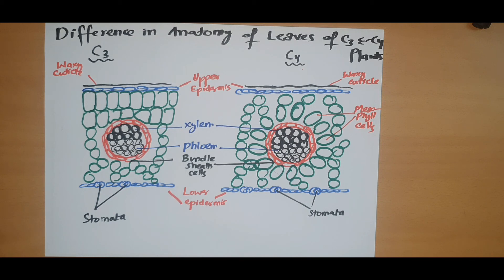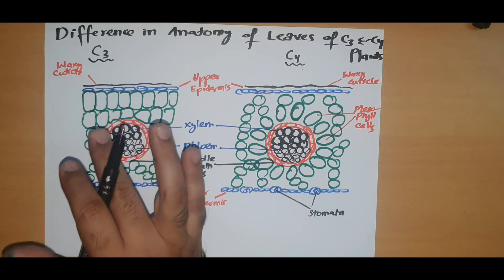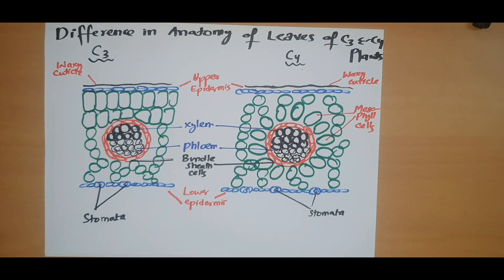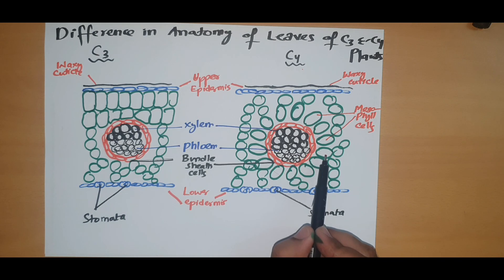To conclude: in C3 plants, the photosynthetic reactions happen in the chloroplasts directly in both the palisade and spongy mesophyll cells. But in C4 plants, the dark reaction or Calvin cycle is divided between the bundle sheath cells and the mesophyll cells, which we are going to discuss in the next lecture. Thank you very much. See you next lecture.